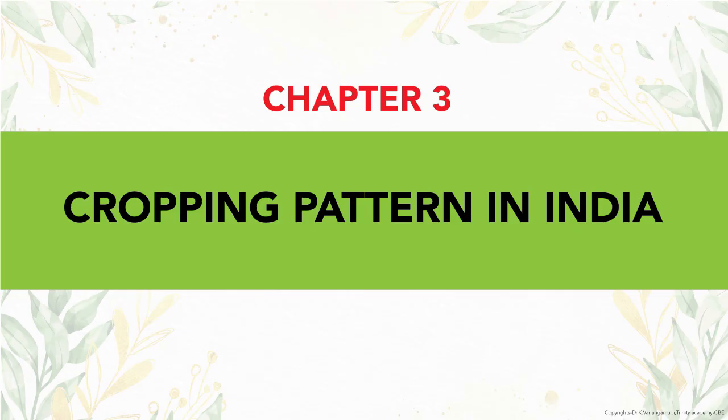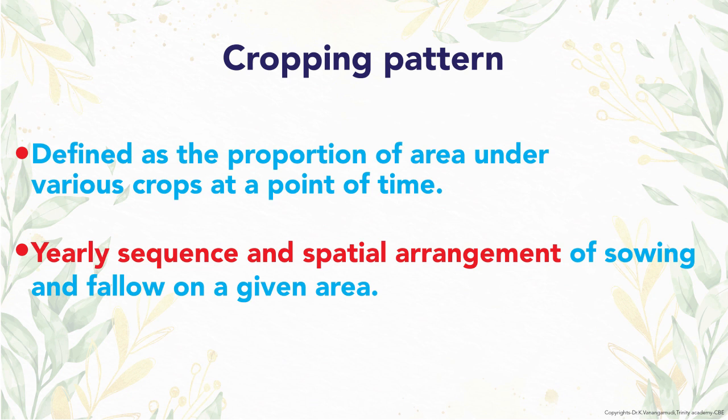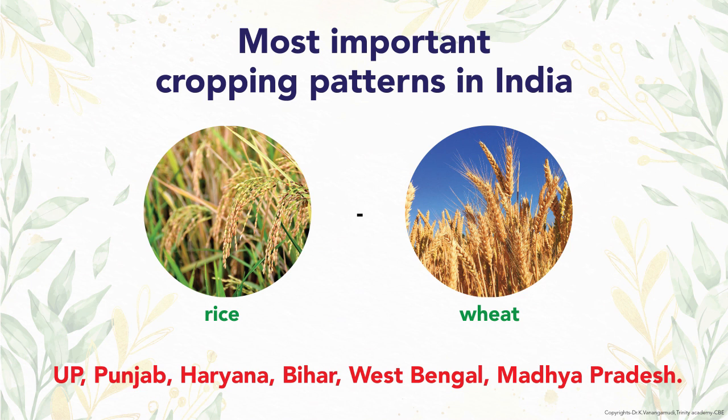Now let us discuss Chapter 3: Cropping Pattern in India. A cropping pattern is defined as the proportion of area under various crops at a point of time. It is the yearly sequence and spatial arrangement of sowing and fallow in a given area.